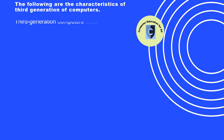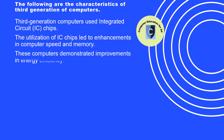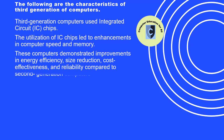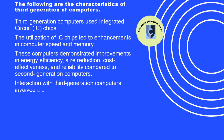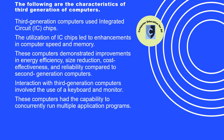Third generation computers used integrated circuit (IC) chips. The utilization of IC chips led to enhancements in computer speed and memory. These computers demonstrated improvements in energy efficiency, size reduction, cost-effectiveness, and reliability compared to second generation computers. Interaction with third generation computers involved the use of a keyboard and monitor, and they had the capability to concurrently run multiple application programs.